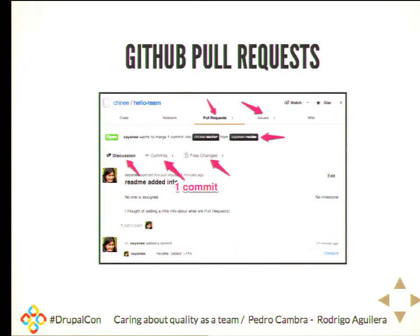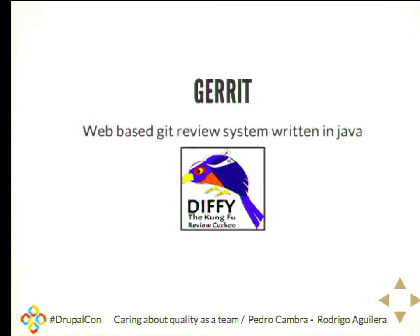I think Dries mentioned something this morning about having branches. There is also an initiative called Issue Workspace that is kind of having pull requests on Drupal.org. I currently use Gerrit for code review. It's the tool I like because it does one thing and does it well. It also serves as a hosting repo tool because it takes control over your repo — Gerrit does the merges of the code. It allows you to have a clean commit history.